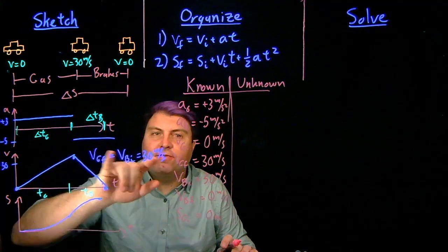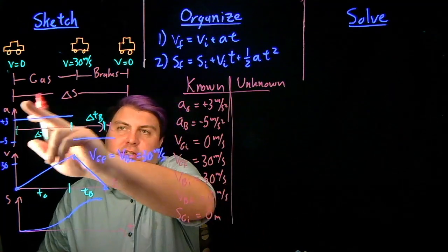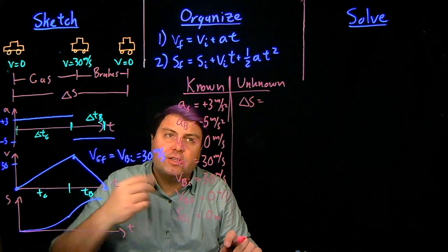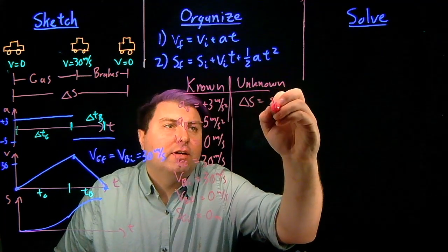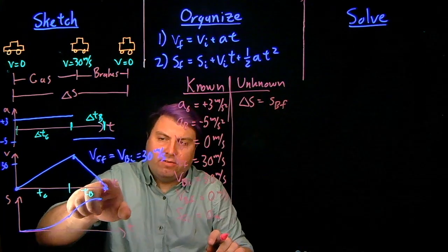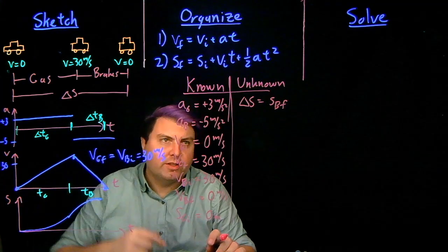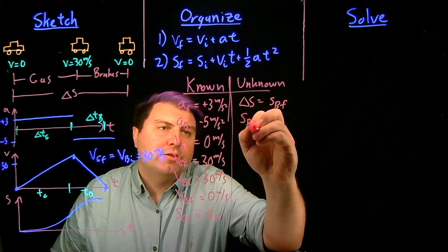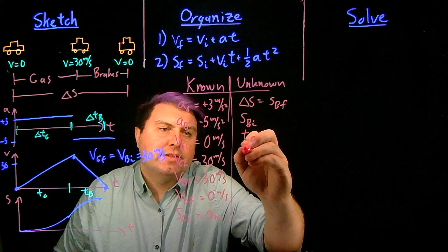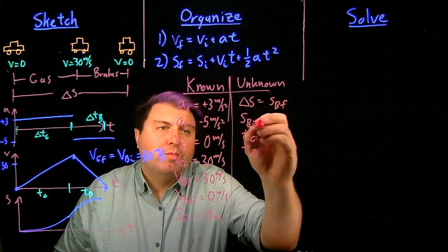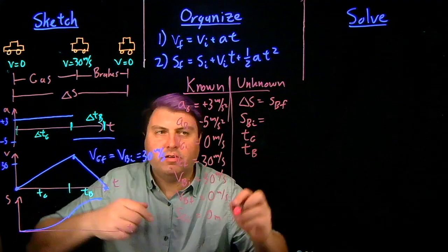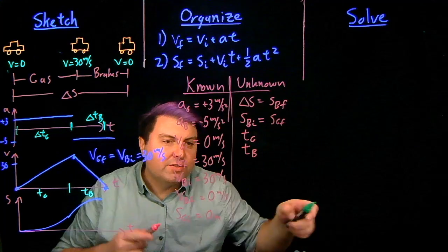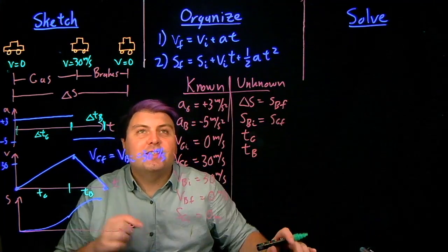And what we want to find first off is we want, eventually, the entire delta S. So we can write this as the position braking final. After we finish braking, that is going to be our position for this. So then, if that's the case, then we need to know our position braking initial. We need to know the time to gas, and we need to know the time to brake. But we know the position braking initial, this is also continuous, is equal to the position gas final. So, a number of things to solve. So let's get to it.